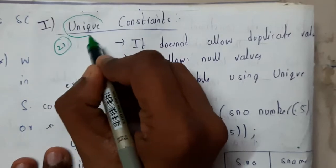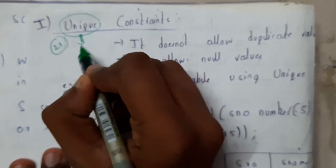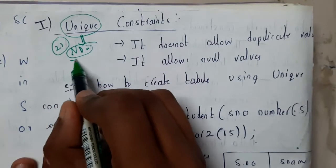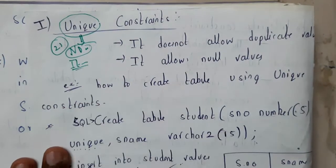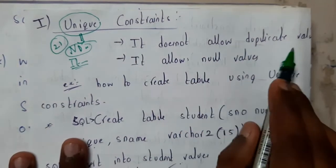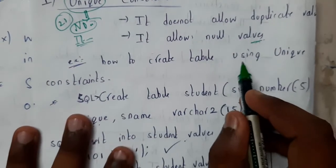The word unique says there is no possibility for duplicate values, and it allows null values. That is the main condition you should remember: it does not allow duplicate values, but it allows null values.